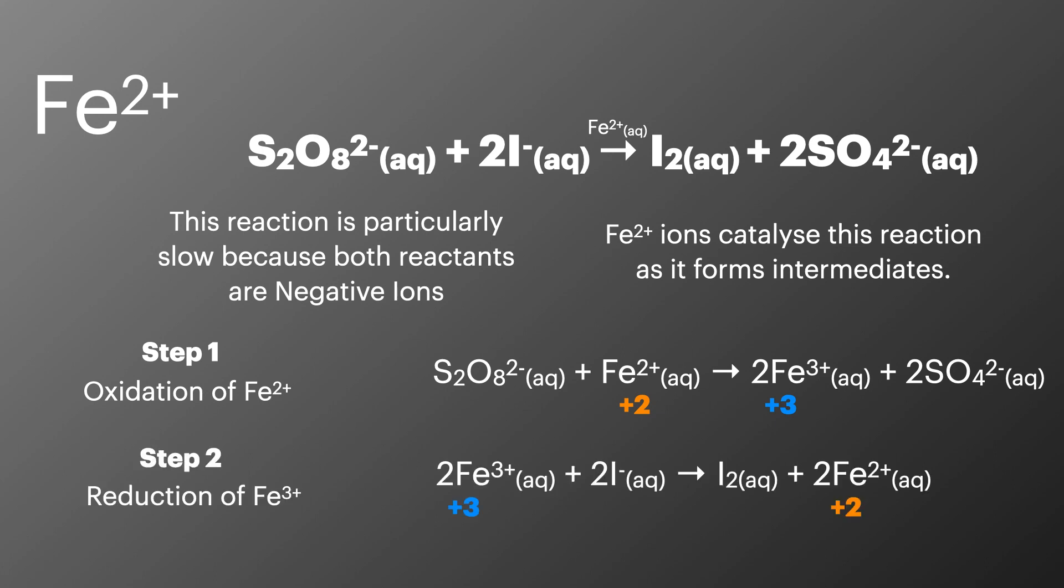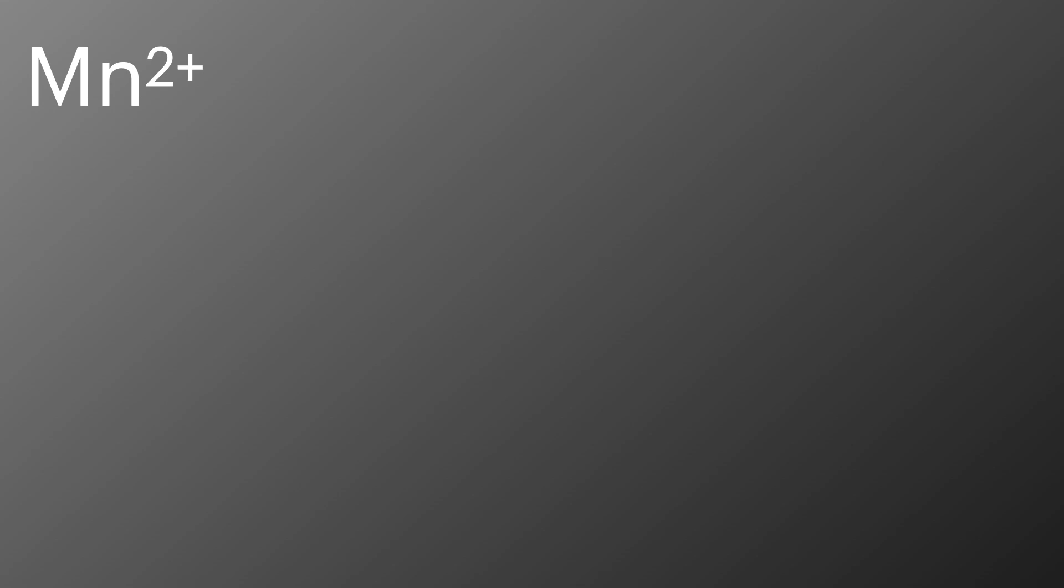In step 2 the now formed Fe3+ ions react with the iodide ions. The Fe3+ ions can take the electrons from the iodide ions allowing the formation of iodine and the regeneration of the catalyst.